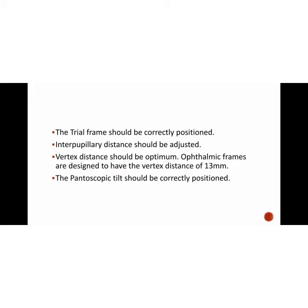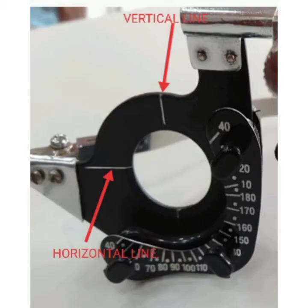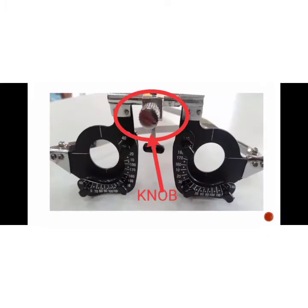The trial frame should be properly placed on the patient. We need to adjust the interpupillary distance. As shown in this picture, the horizontal line should be aligned horizontally at the center of the pupil, and the vertical line should be aligned vertically at the center of the pupil. This alignment is done by adjusting the knob.